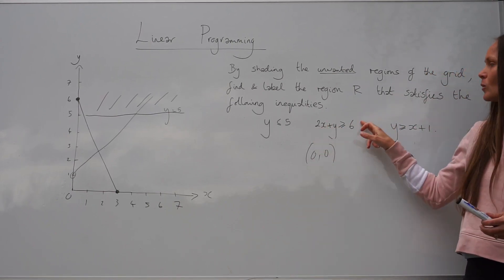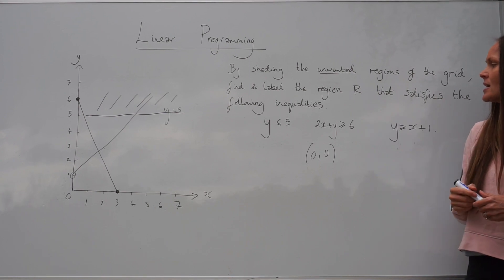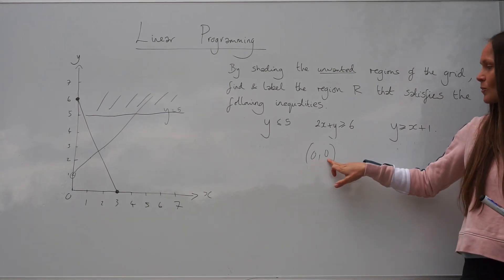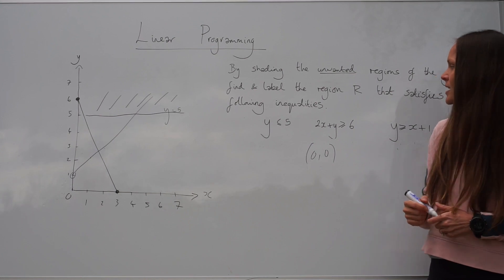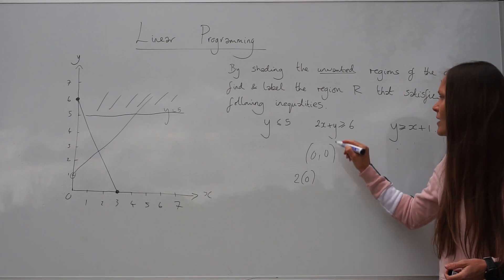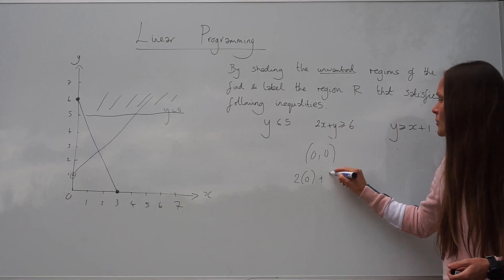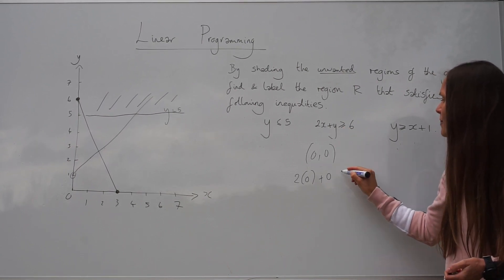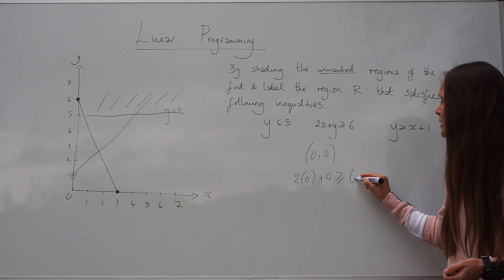And you must substitute those points into the inequality, and then compare it with the inequality that you need. So you need to change both the x and y values to 0. So instead of saying 2 multiplied by x, we've got 2 multiplied by 0, and then we're adding another 0, because y is also 0. And then it's meant to be greater than or equal to 6.